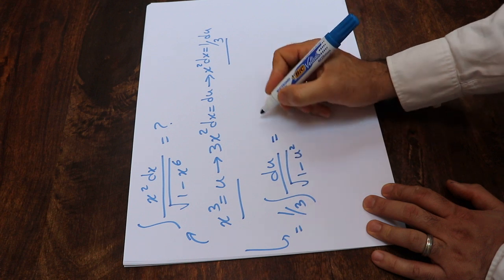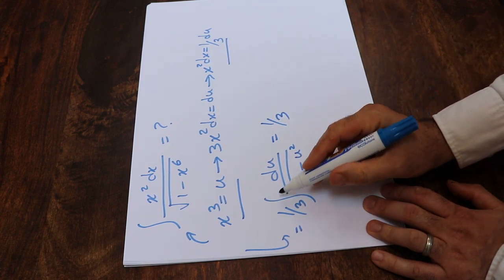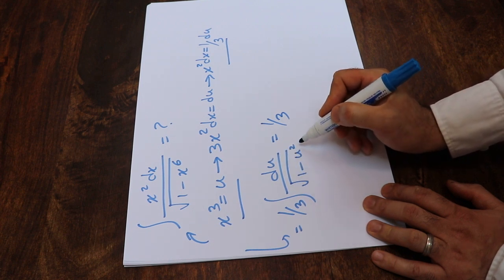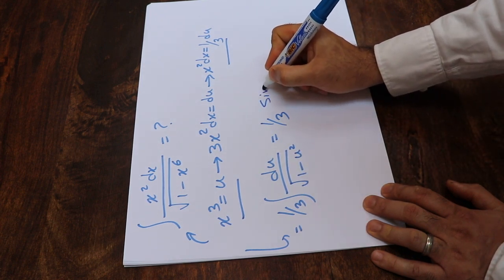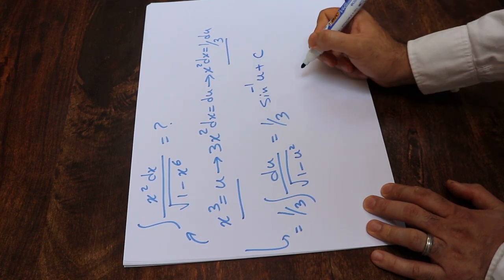And that will equal 1 divided by 3. From a table of integrals, we know that the integral of du divided by the square root of 1 minus u² will equal sin⁻¹ u plus c.